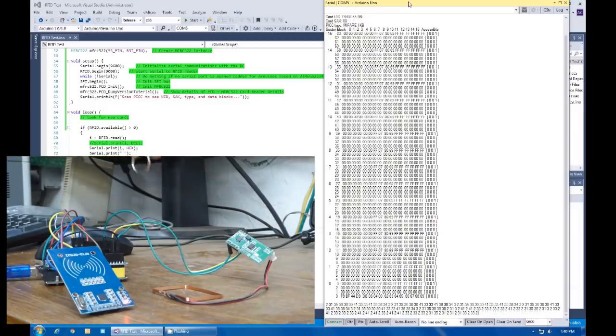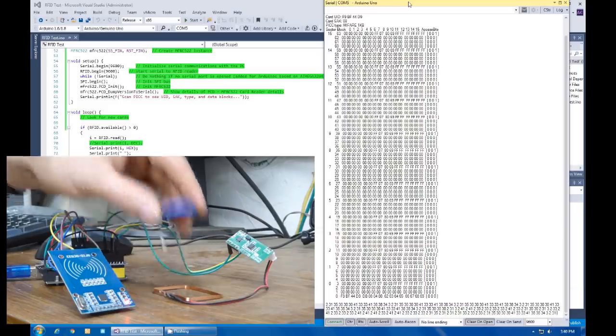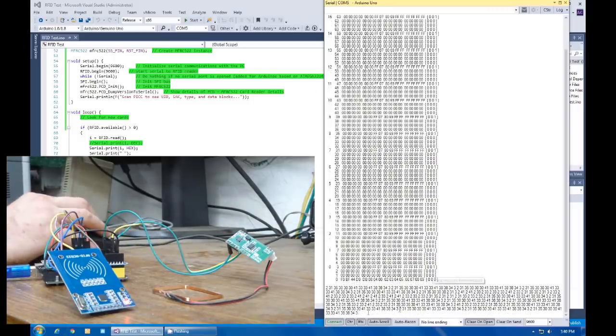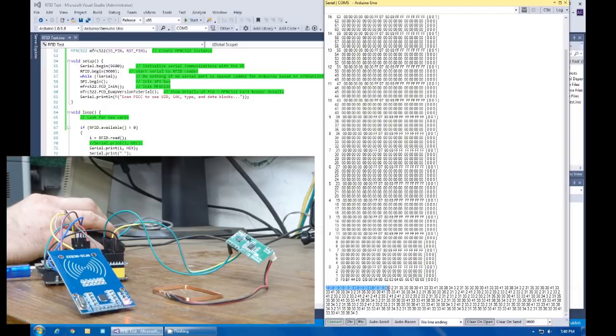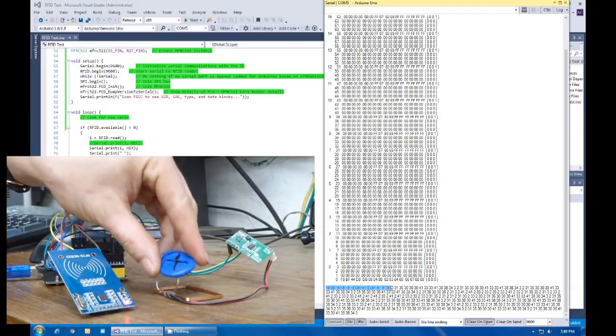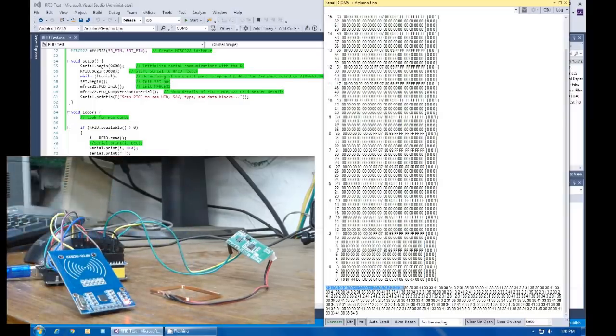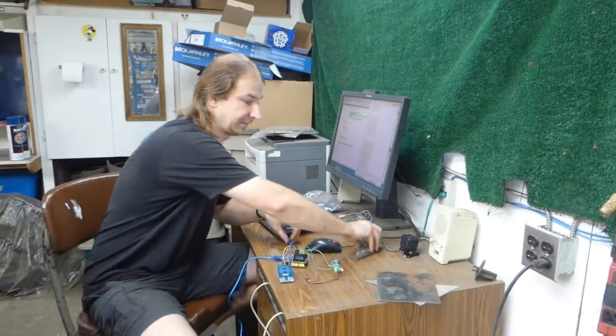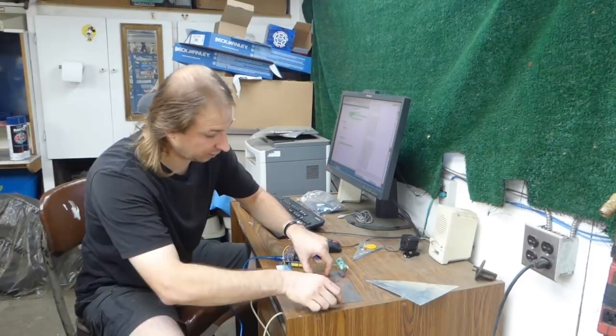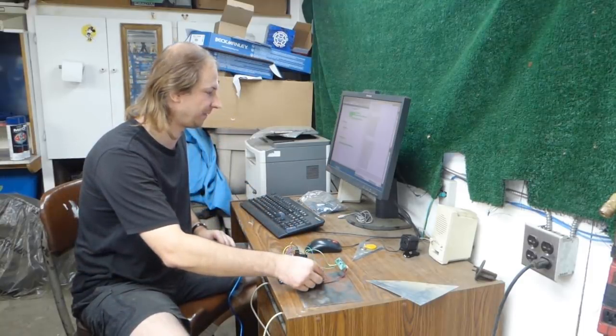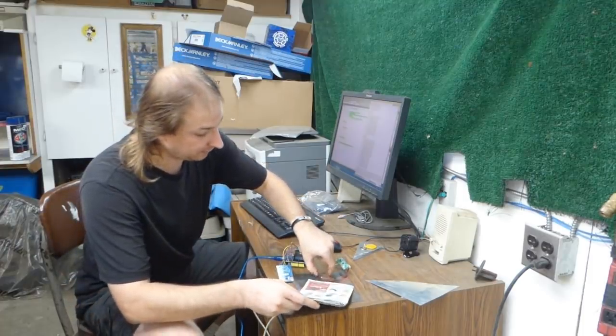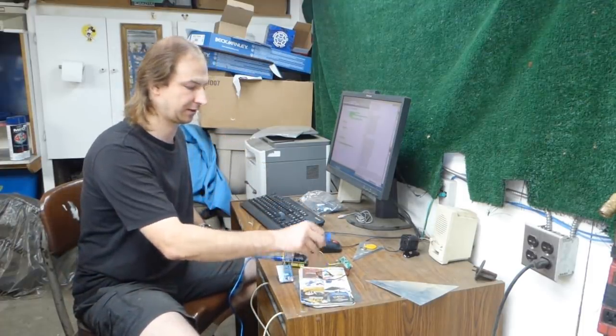Right away I can tell that the range of the 125 kilohertz tag is about twice as much as the 13 megahertz tag. It's important to note that neither tag scans when separated from the reader by metal. The coil doesn't like being on top of metal because it reduces the range to about a few millimeters. However, space it away from the metal just a bit and the range comes back.